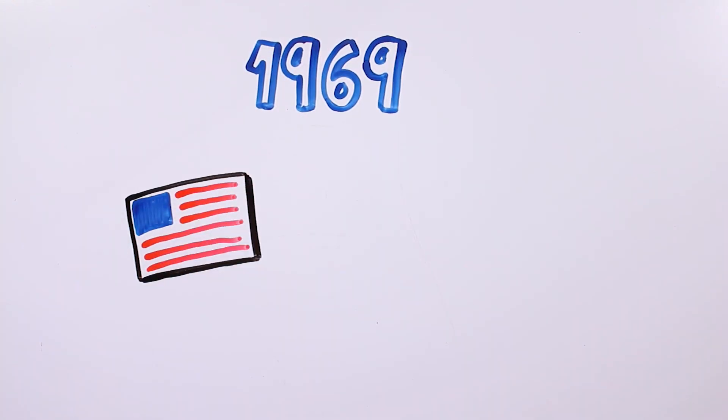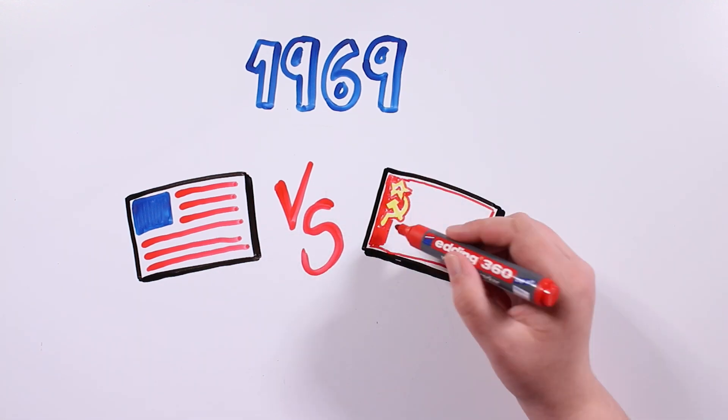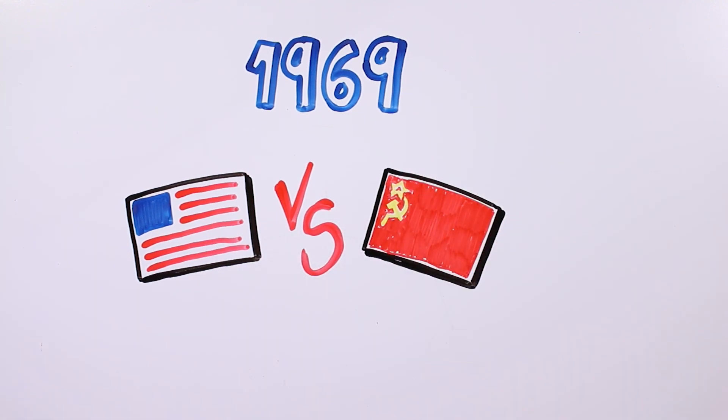July 1969. The US and the Soviet Union were going through the Cold War, a moment of tension where they were fighting to decide who was the first world power.